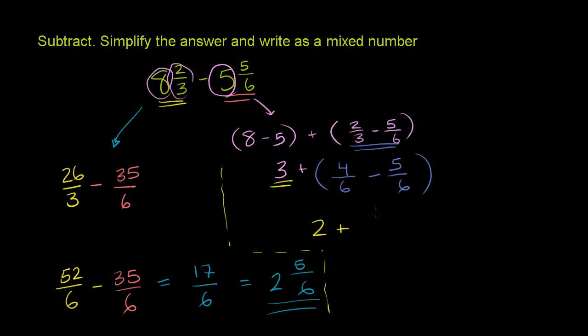We can rewrite the 3 as 2 plus 1. But instead of writing it as 1, we could write it as 6 over 6. Right? 6 over 6 is 1 plus 2 is 3. And then if we add it to these guys, so plus 4 over 6 minus 5 over 6.